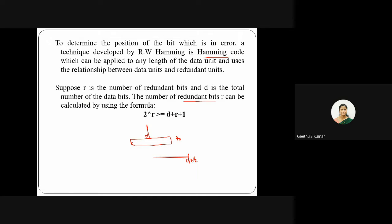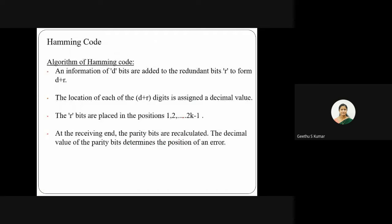The algorithm works as follows: the d data bits are combined with r redundant bits to form a total frame of d plus r bits. Each bit position is assigned a location, and the redundant bits are placed at positions that are powers of 2 — that is, positions 2 raised to 0, 2 raised to 1, 2 raised to 2, and so on.